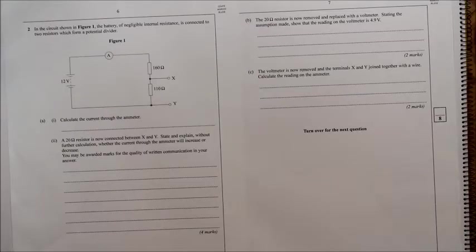In the circuit shown below, the battery of negligible internal resistance is connected to two resistors which form a potential divider. Calculate the current through the ammeter.